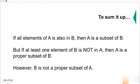So that's subset and proper subset. To sum it up, if all elements of A are also in B, then A is a subset of B. B is also a subset of A. But if set B has other contents, then A is not a subset, but a proper subset of B. But you cannot reverse that. B cannot be a proper subset of A.